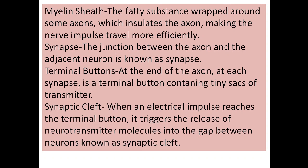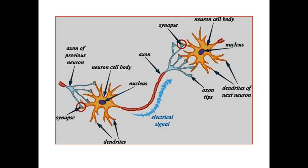The myelin sheath is the fatty substance wrapped around some axons which insulates the axon, making the nerve impulse travel more efficiently. Another important structure is the synapse — it is the junction between the axon and the adjacent neuron. Terminal buttons at the end of the axons contain tiny sacks of neurotransmitter. When an electrical impulse reaches the terminal button, it triggers the release of neurotransmitter molecules into the gap between neurons, which is known as the synaptic cleft.